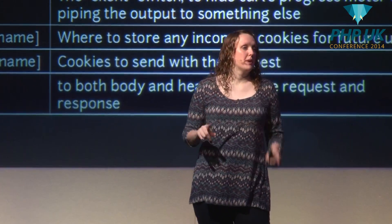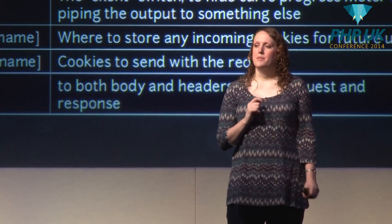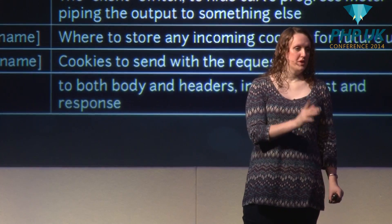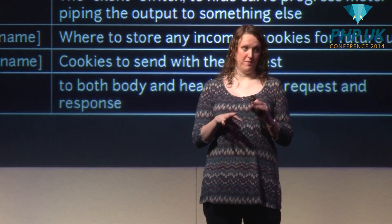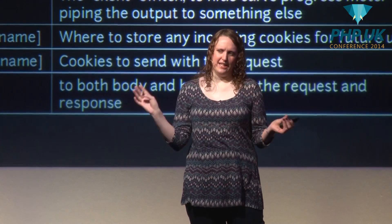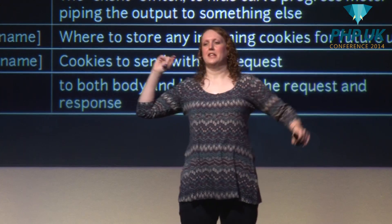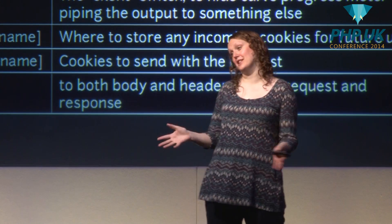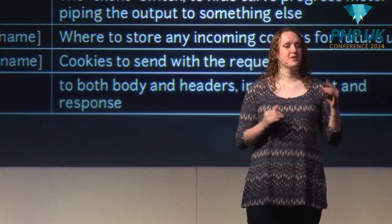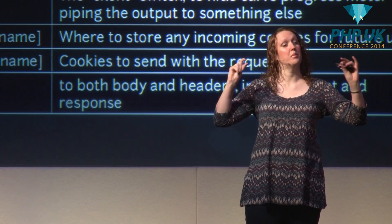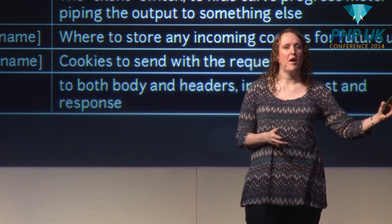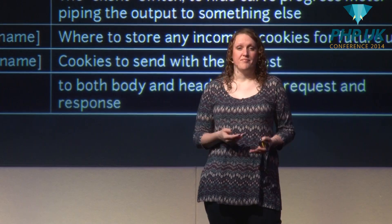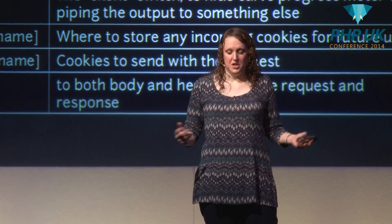-S is the silent switch. If you want to pipe the output of Curl to something else, Curl will detect this and try to helpfully give you a progress bar. That's never what I want it to do, so -S suppresses that output and just gives you the output of Curl piped to whatever you wanted — it might just be 'less' because the output is quite long.